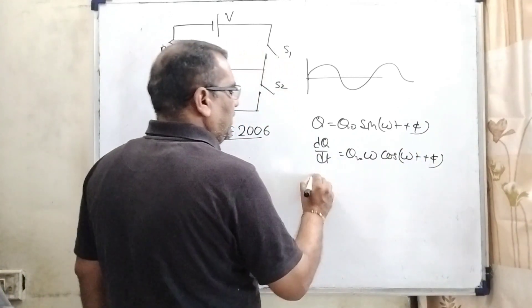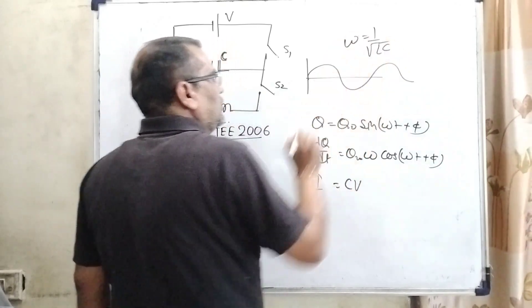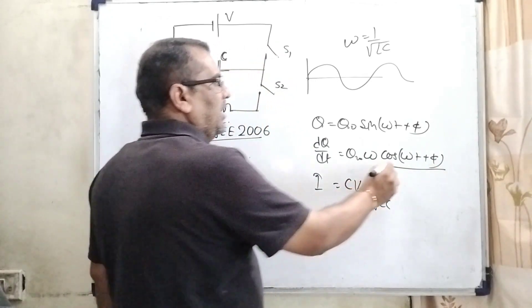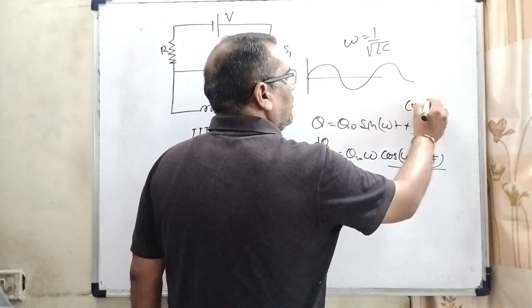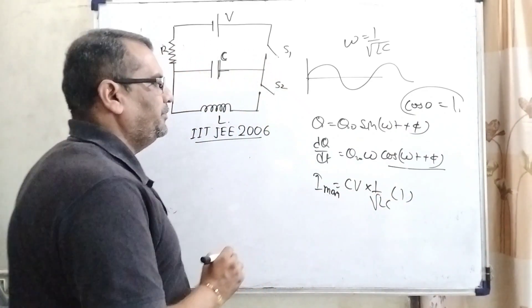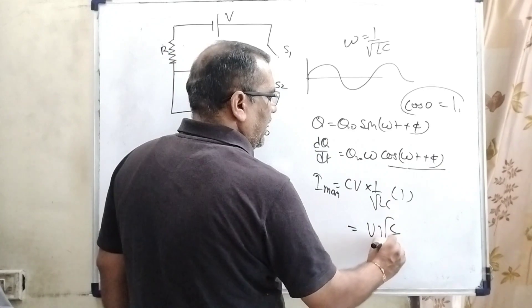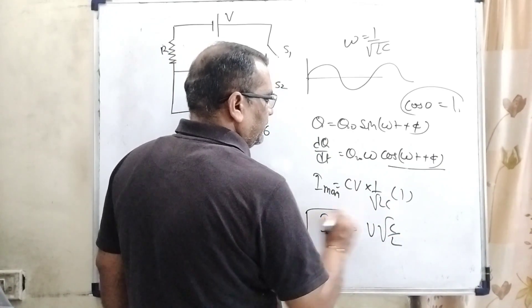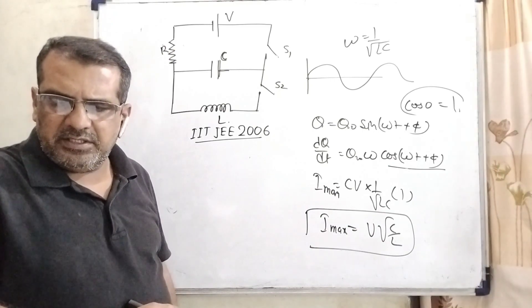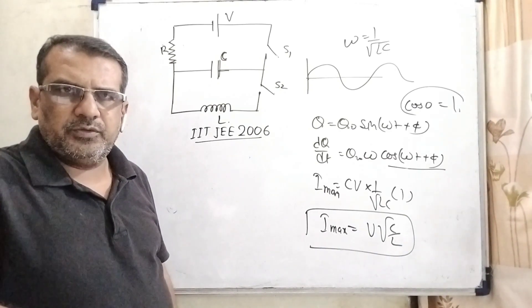So, here dq by dt that is current, and q can be written as CV. Omega we know that frequency is 1 over root LC. So, here substitute the value 1 over root LC and at the maximum condition we can put cos 0 which is 1. So, therefore, I max, C can be written as root C root C. One root is cancelled. So, V into root C by L, that is maximum current we have to find out. So, here I think option D, at any time t is greater than 0, maximum instantaneous current in the circuit is V into root C by L. Option D is correct. I hope you understood this question.